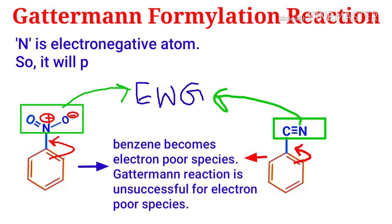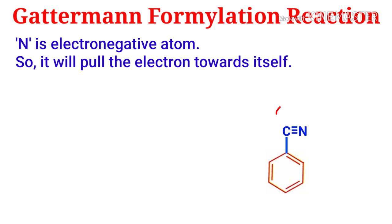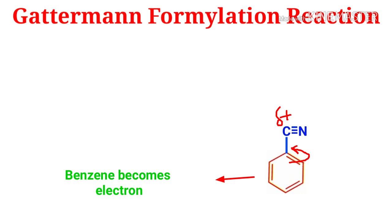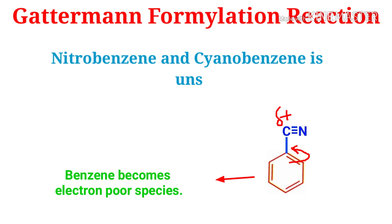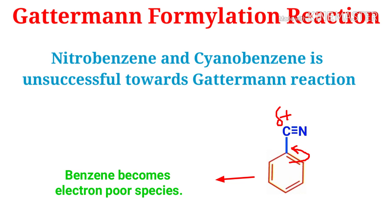Another reason is that nitrogen is an electronegative atom, so it pulls electrons towards itself, and the carbon atom gets a partial positive charge. To neutralize this partial positive charge, electron density shifts from the benzene ring, and finally the benzene ring becomes an electron-poor species. For this reason, nitrobenzene and cyanobenzene are unsuccessful towards the Gutterman reaction.